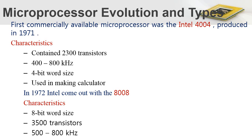Later in 1972, the next processor, the Intel 8008, was introduced. It was an 8-bit processor, meaning it could process 8 bits of information at a time, and contained approximately 3,500 transistors with a clock speed of 500 to 800 kilohertz.